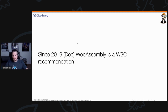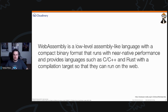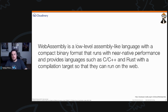WebAssembly allows us to do exactly that, and as of December 2019, WebAssembly became a W3C recommendation — it has a proper spec you can read on the W3C website. The official explanation from MDN states that WebAssembly is a low-level assembly-like language with a compact binary format that runs with near-native performance, providing languages such as C, C++, and Rust with a compilation target so they can run on the web.